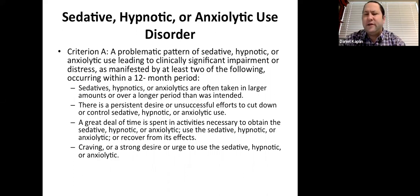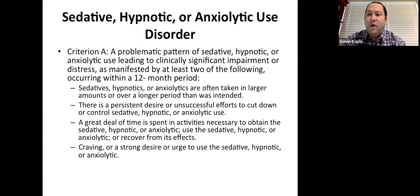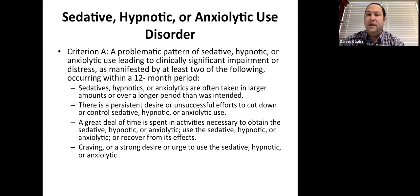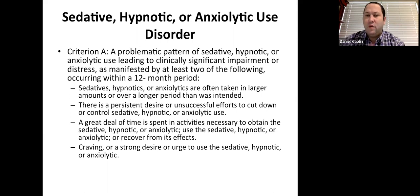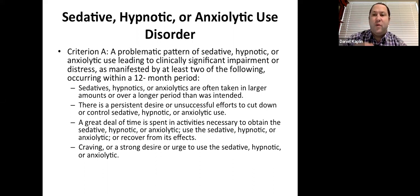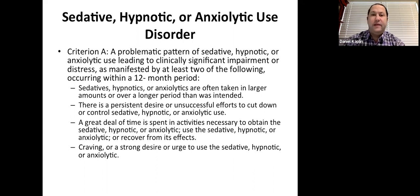Now let's talk about the criteria for a sedative, hypnotic, or anxiolytic use disorder. As with all substances of abuse, you're tracking symptoms over 12 months, and there has to be some level of clinical impairment with two or more of the following features, plus tolerance and withdrawal. When going through the symptoms in criterion A, you only need two. The more you have, the more severe the condition.